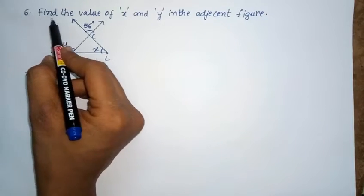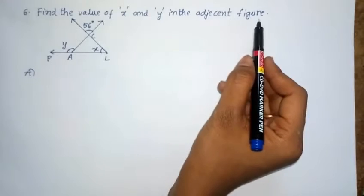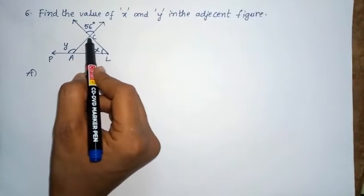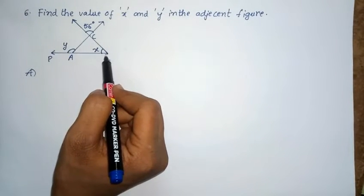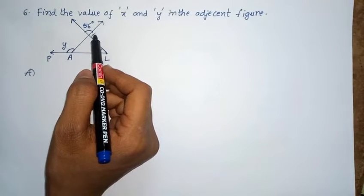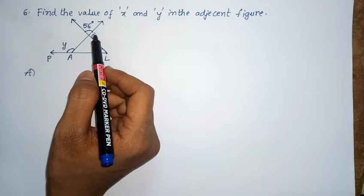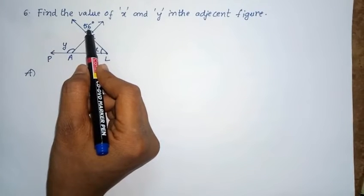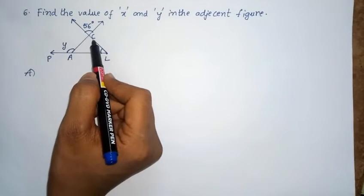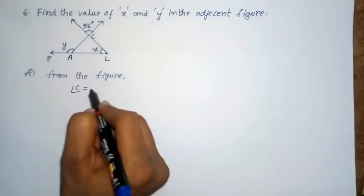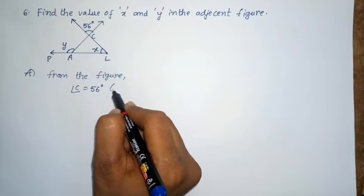Next problem, sixth: find the value of x and y in the adjacent figure. This is triangle ACL. The angle shown is 56 degrees. The 56 degrees and angle C are equal because they are vertically opposite angles. So angle C equals 56 degrees because vertically opposite angles are equal.